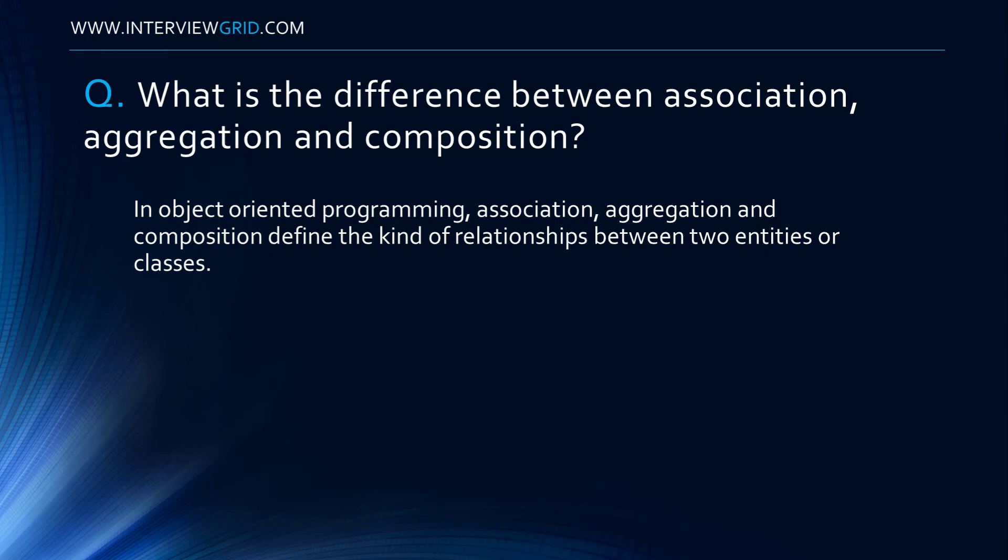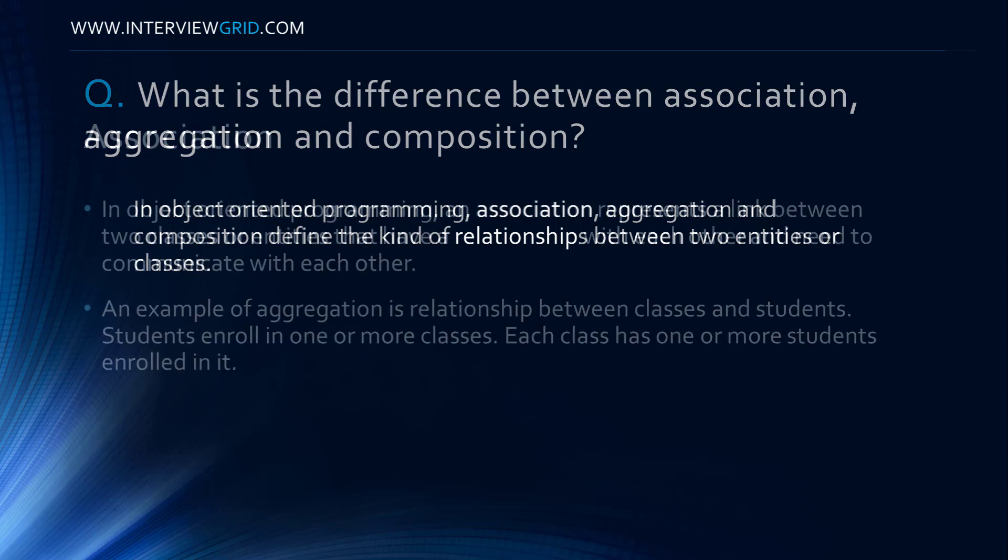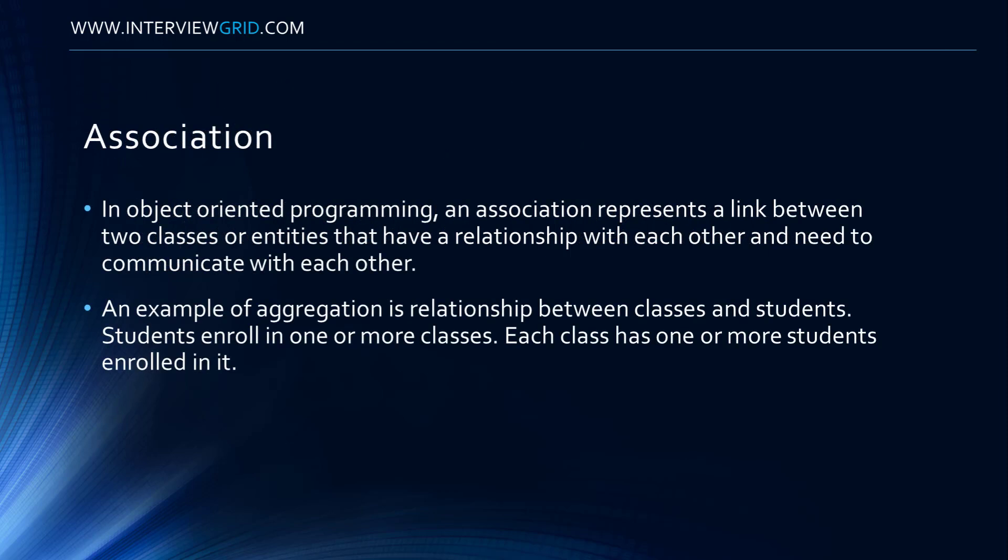Let's look at these relationships one by one. Association. In object-oriented programming, an association represents a link between two classes or entities that have a relationship with each other and need to communicate with each other.